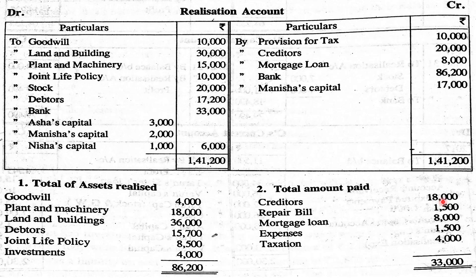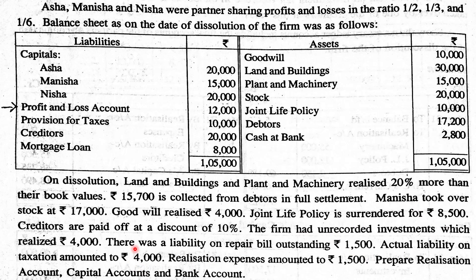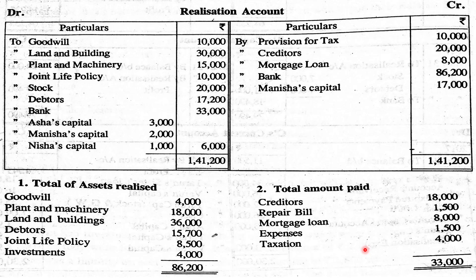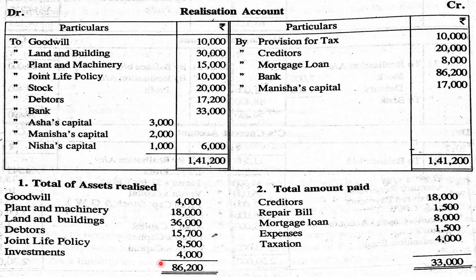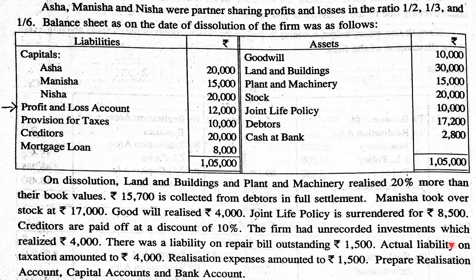For liabilities: creditors are paid at a 10% discount — creditors are 20,000, discount is 2,000, so 18,000 is paid. There was an unrecorded liability on repair bill outstanding of 1,500. Actual liability on taxation amounted to 4,000. Realization expenses amounted to 1,500 — realization account is debited with 1,500 for these expenses.